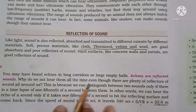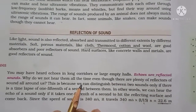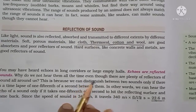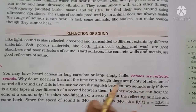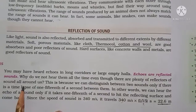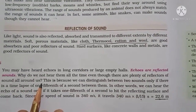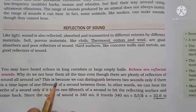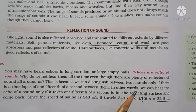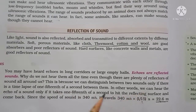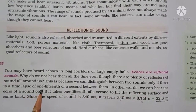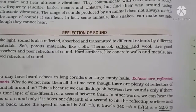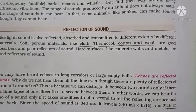But why don't we hear the reflection of sound all the time even though there are plenty of reflectors around us? Because we can distinguish between two sounds only if there is a time gap of 1/10th of a second between them. In simple words, we can hear an echo only if it takes 1/10th of a second for the sound to hit the reflecting surface and come back to our ear. In our small rooms and houses, the walls are closer than 17 metres, so the echo follows the original sound too fast for us to tell them apart, and hence we are not able to hear the echo.